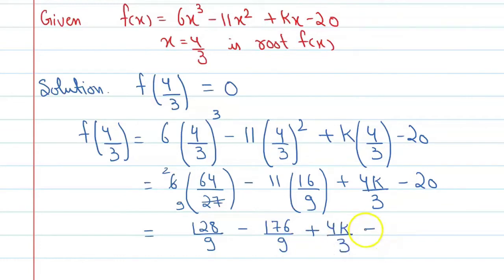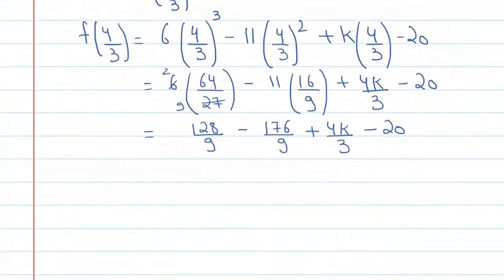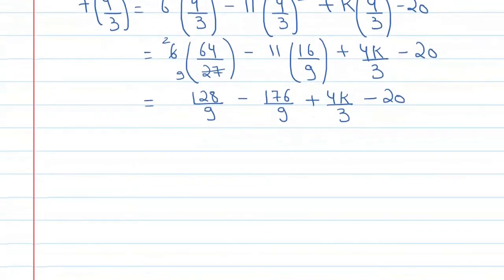We know that value is 0, but we will not write it last so that we can easily solve it. If you solve it then you will get minus 48 upon 9 plus 4k upon 3 minus 20.